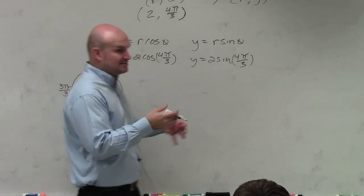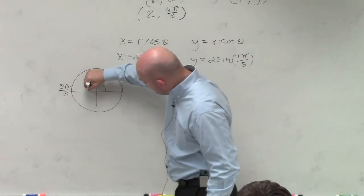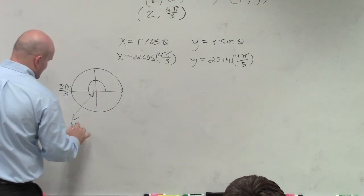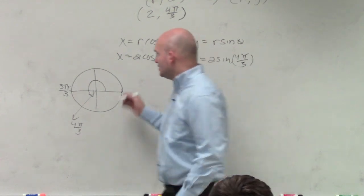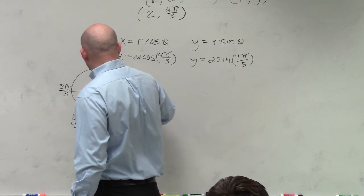So if I'm at 4π over 3, that means I'm just a little bit one-third over. So therefore, that's going to be 4π over 3. Now, you might say, what is that coordinate point? Well, that is the exact opposite of π/3.